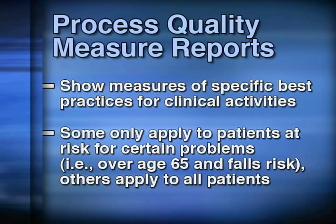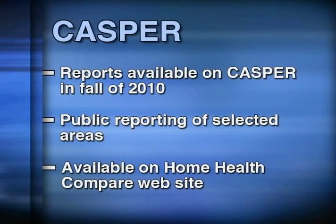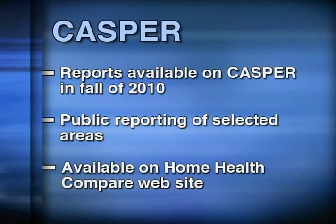Some of these measures will pertain only to patients with certain conditions, for example, diabetes and heart failure. Others will apply to all patients. Beginning in late 2010, a process quality measure report will be available on CASPER. A smaller set of measures has been endorsed by the National Quality Forum and beginning in late 2010 will be reported on Home Health Compare.